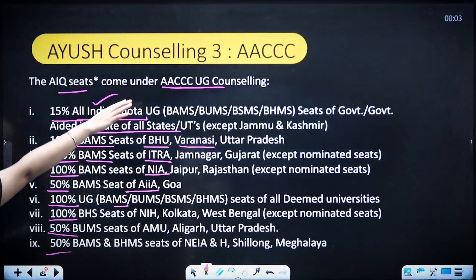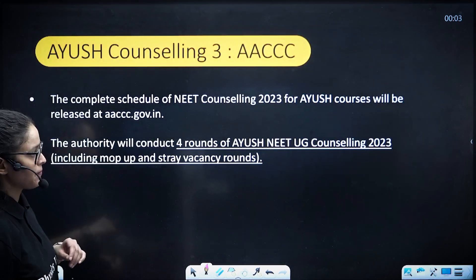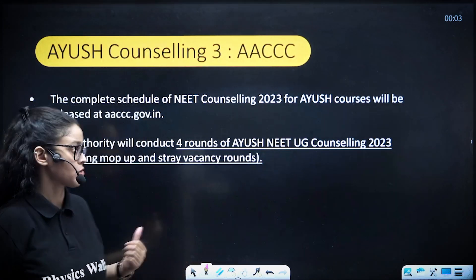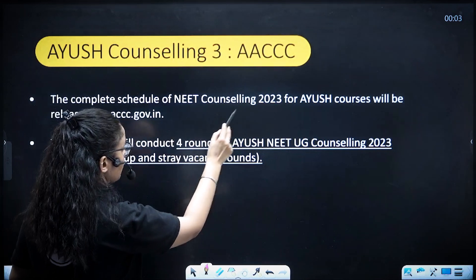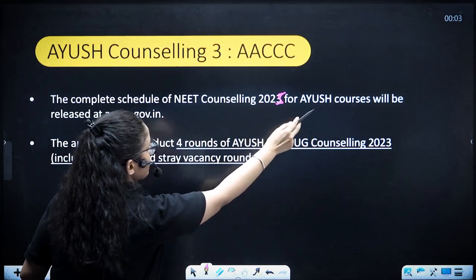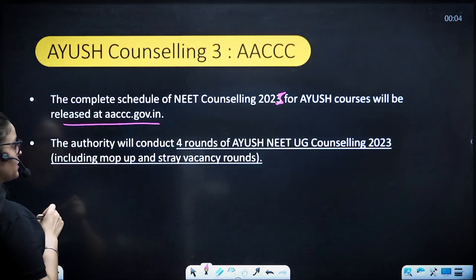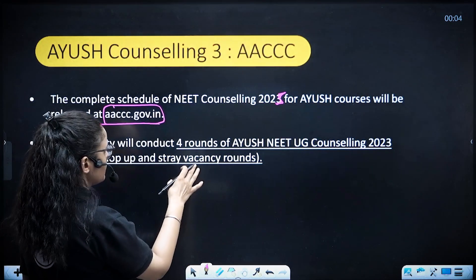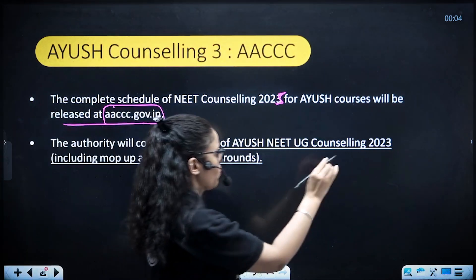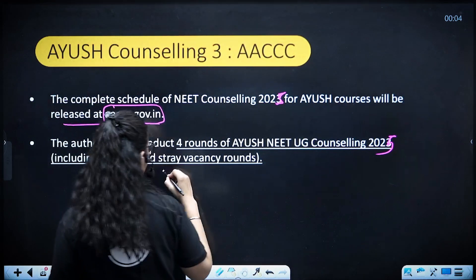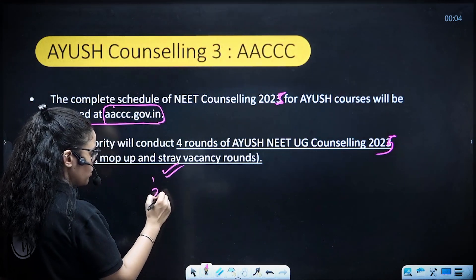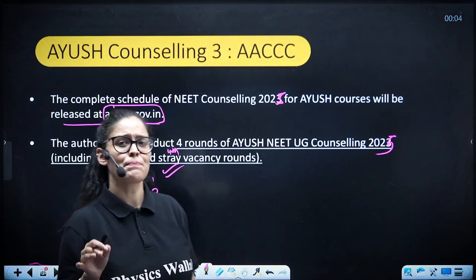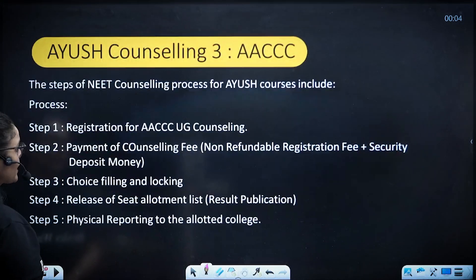All these percentages of seats come under this AACCC counseling, so you must register on this website for counseling of all these courses. The complete schedule of AYUSH NEET counseling 2025 for AYUSH courses will be released at aaccc.gov.in. The authority will conduct four rounds of AYUSH NEET counseling in 2025: Round 1, Round 2, Round 3 (the Mop-Up round), and Round 4 (the Stray Vacancy round) — same process as MCC.